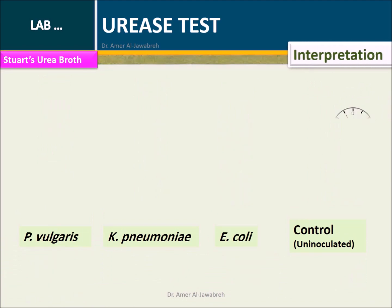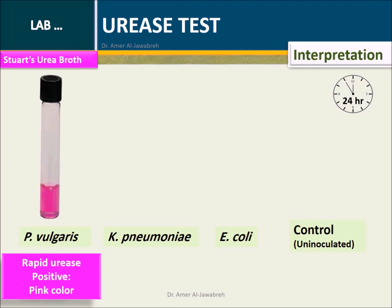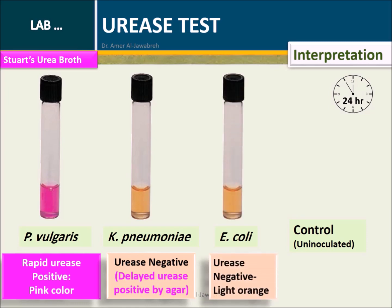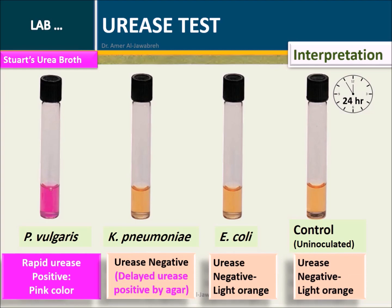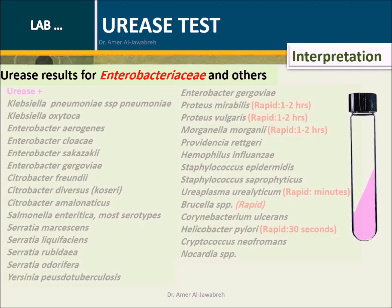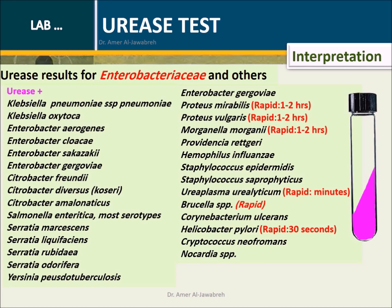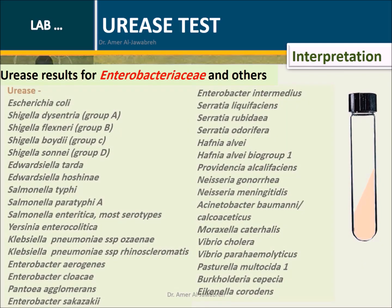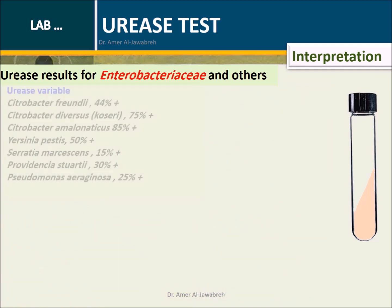Interpretation: Urease results for Enterobacteriaceae and others. Categories include: urease positive, urease negative, and urease variable.